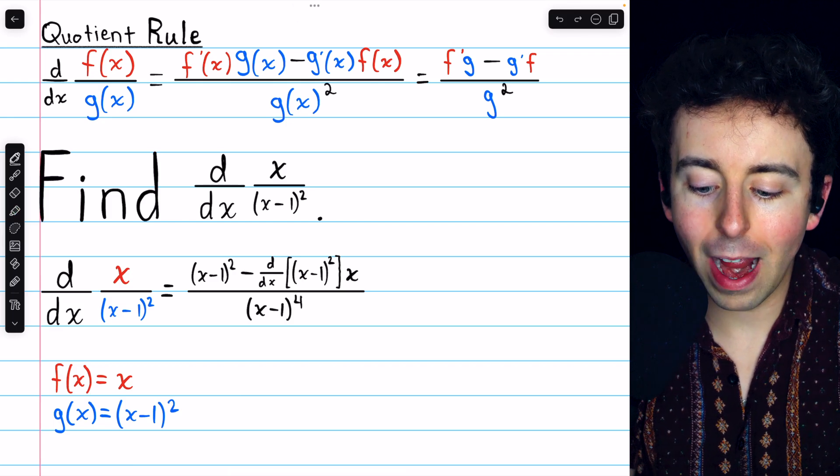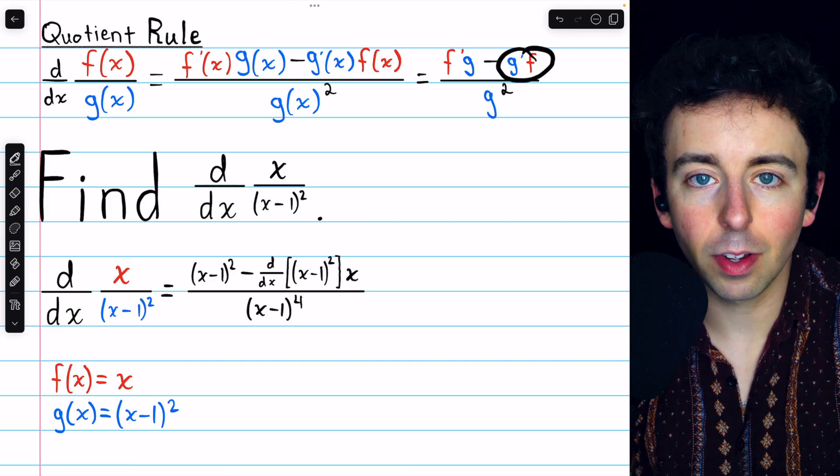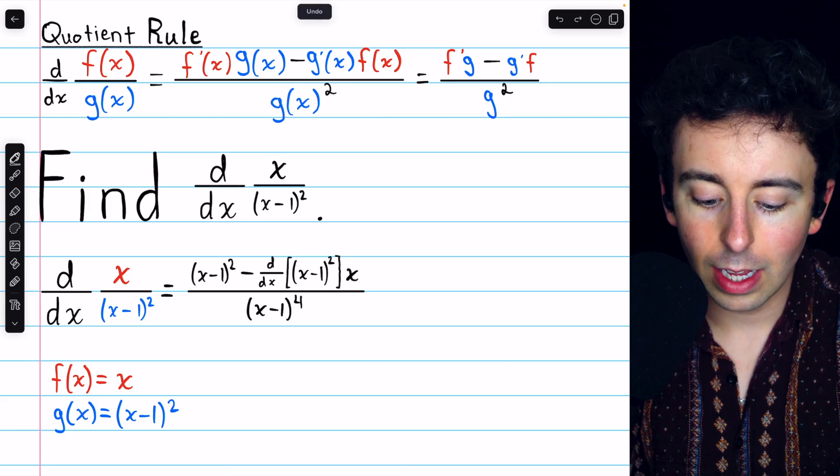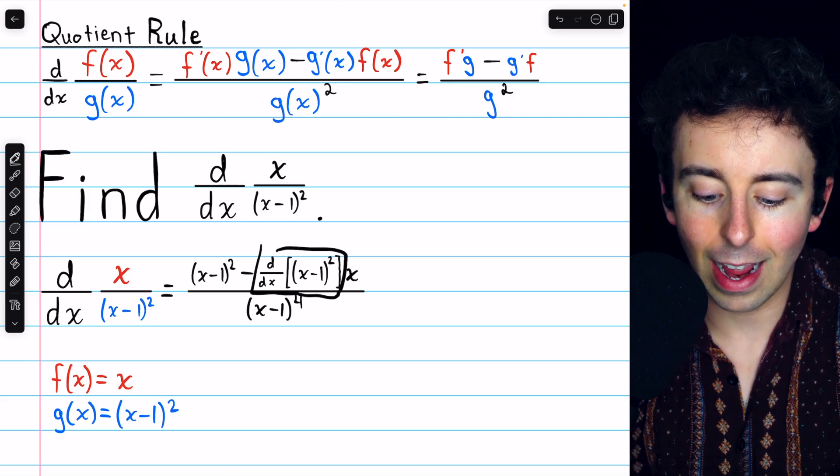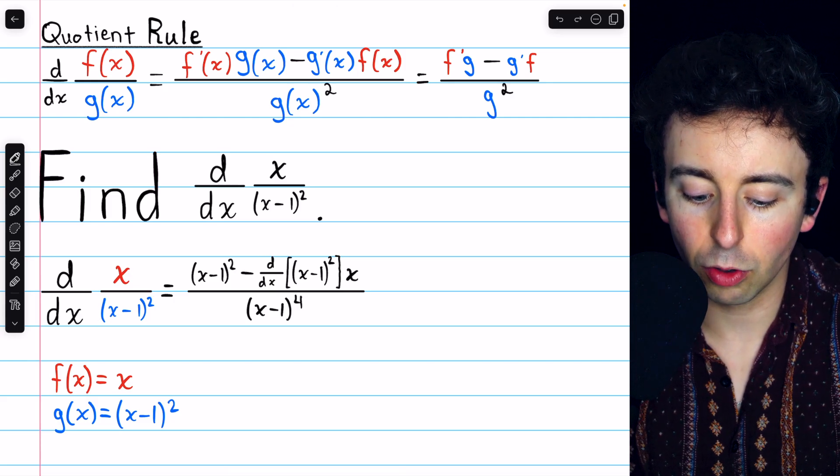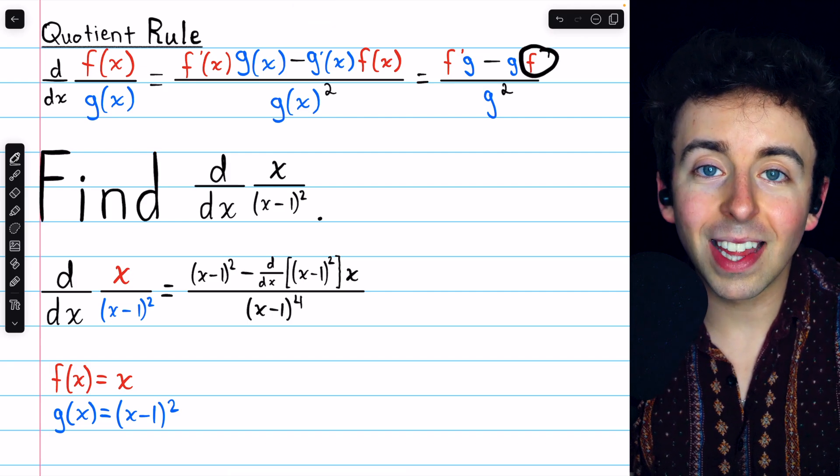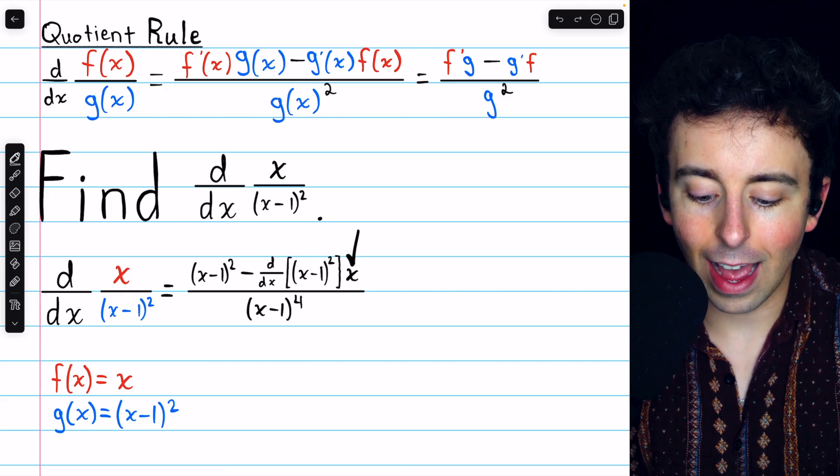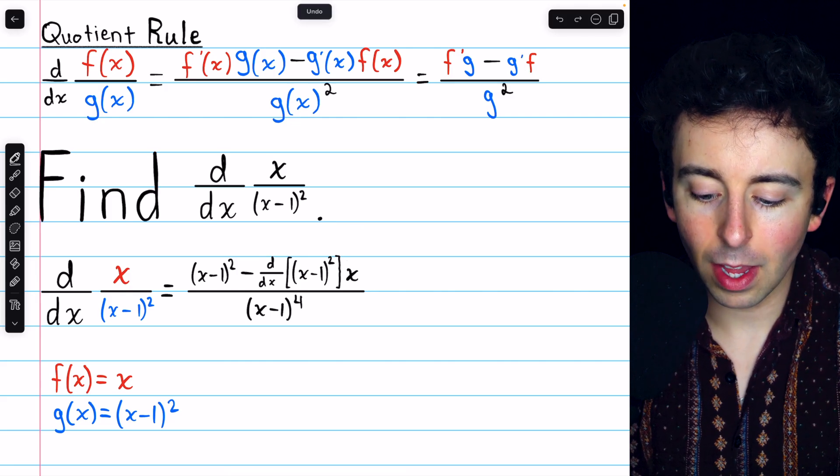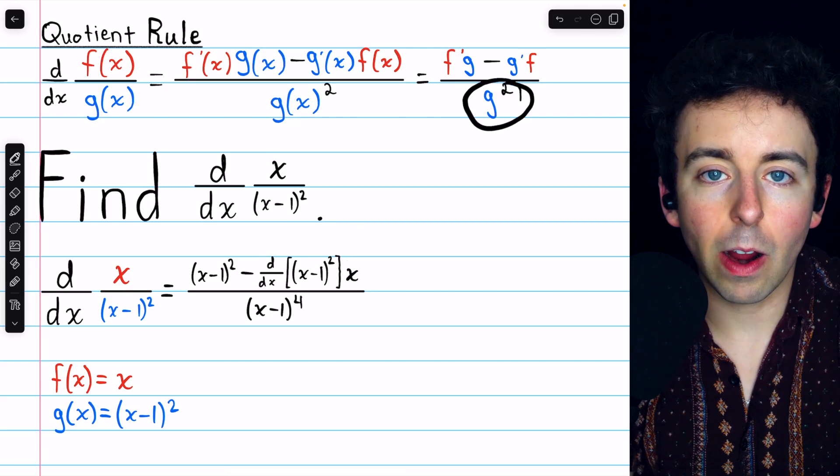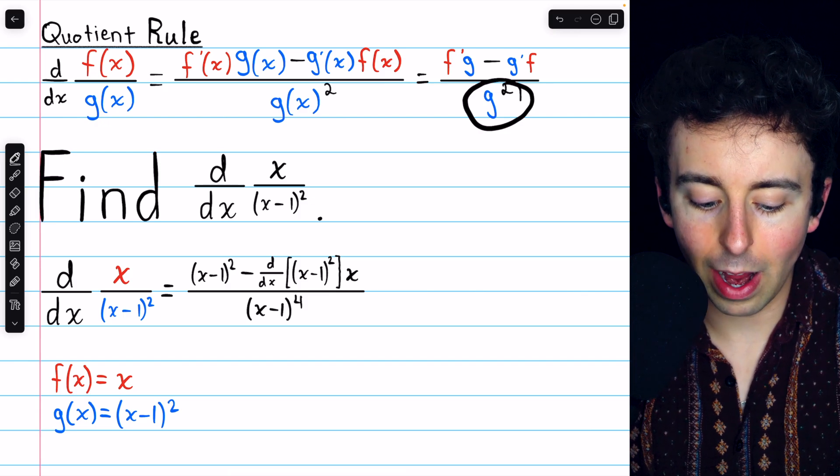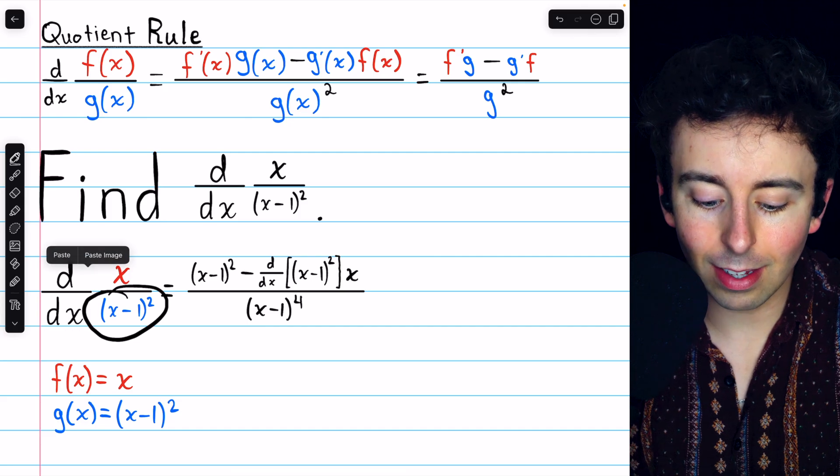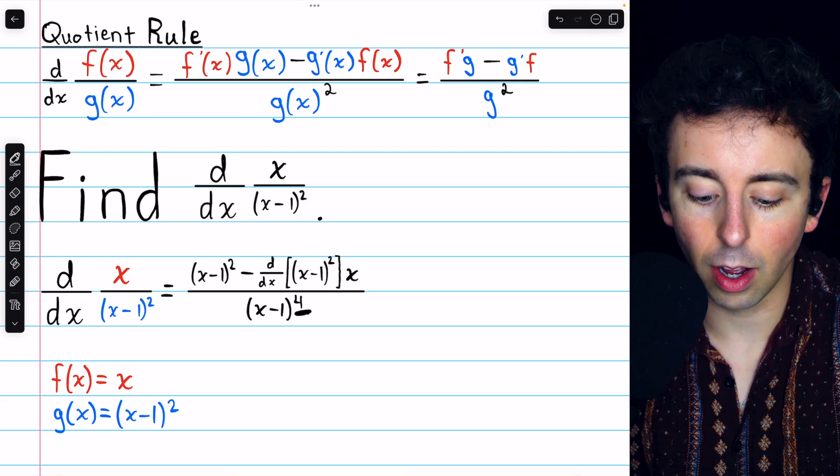Then we must subtract g prime f. g prime is the derivative of the denominator, and I'll just leave that there for right now, the derivative of x minus 1 squared. And then we have to multiply that by f. f is the function in the numerator, and that is x, so we multiply by x. Then divide by g squared. That's the denominator, squared. x minus 1 squared squared is x minus 1 to the power of 4.